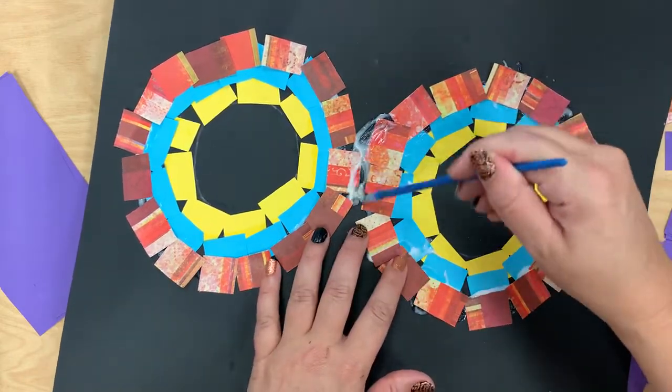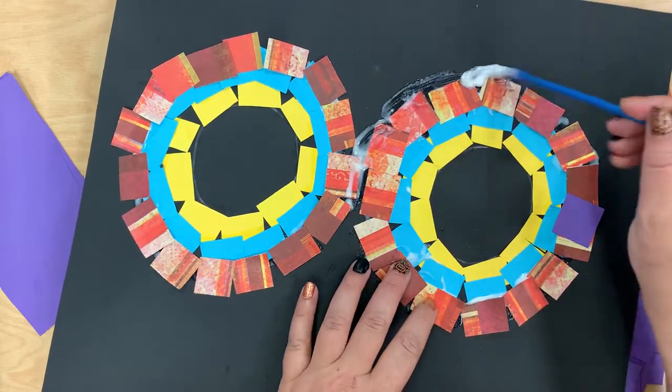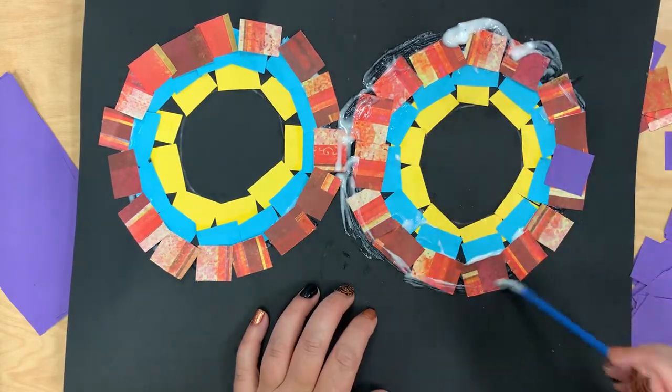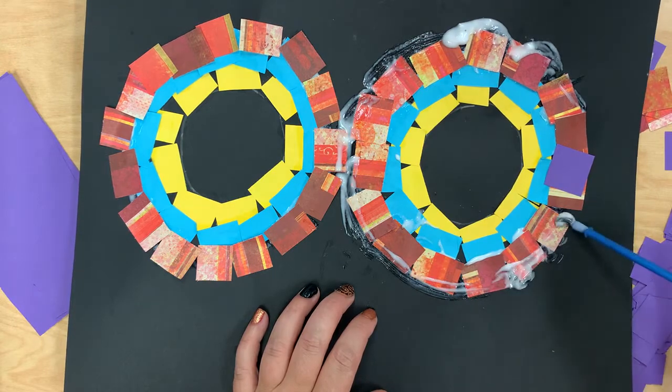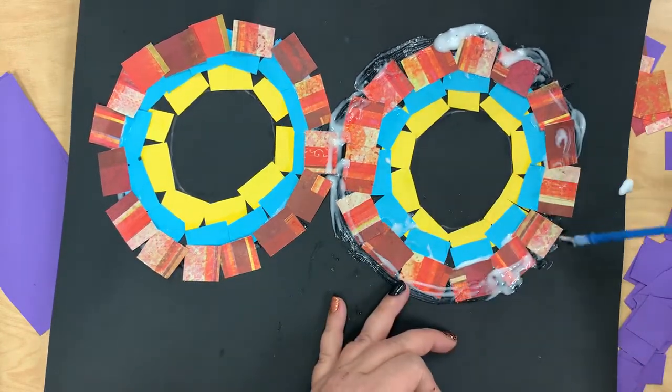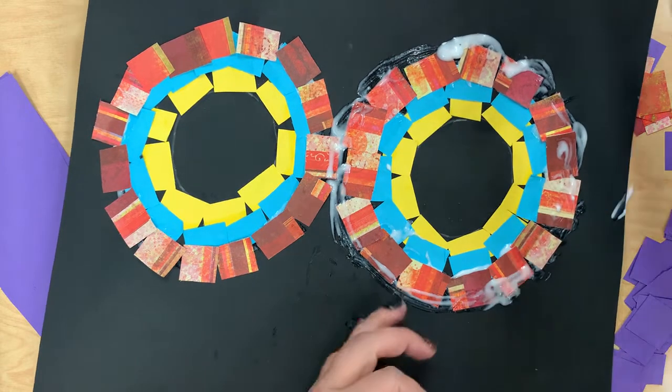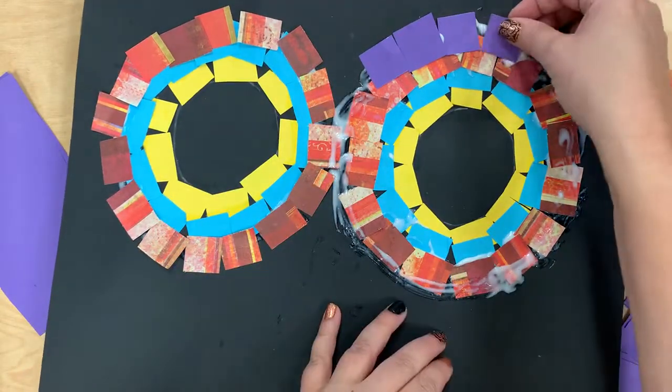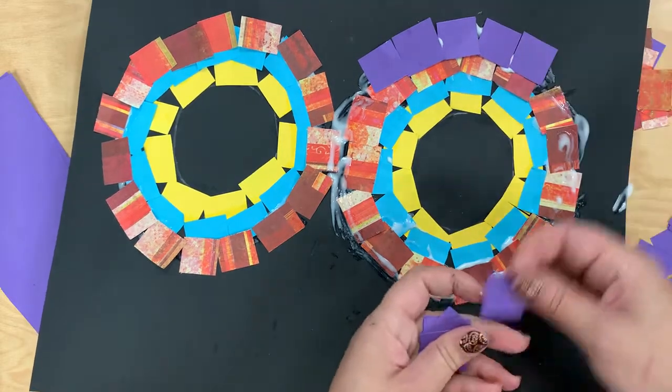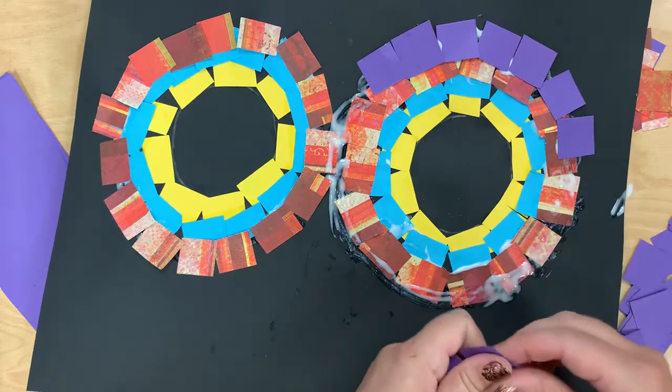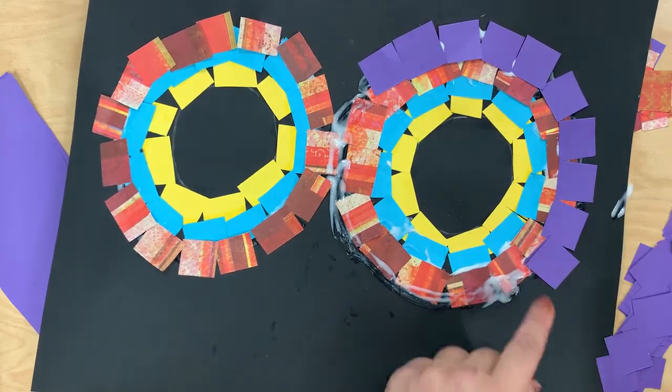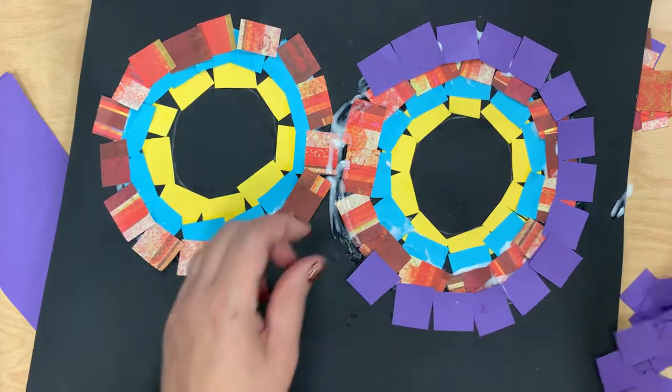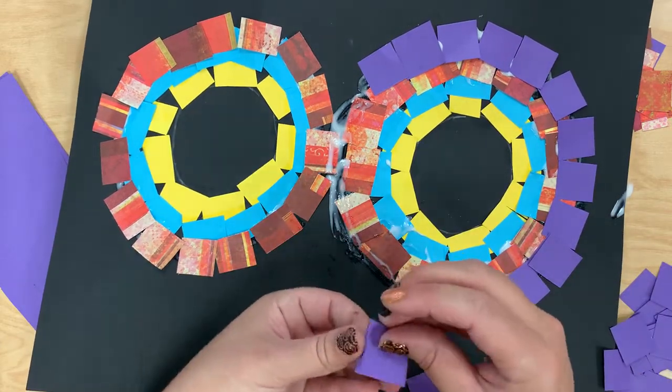So once again, now I'll be able to sneak it through, but you might not be able to. I'm just going to go around the outside with the glue. I'm going to do my bright row.